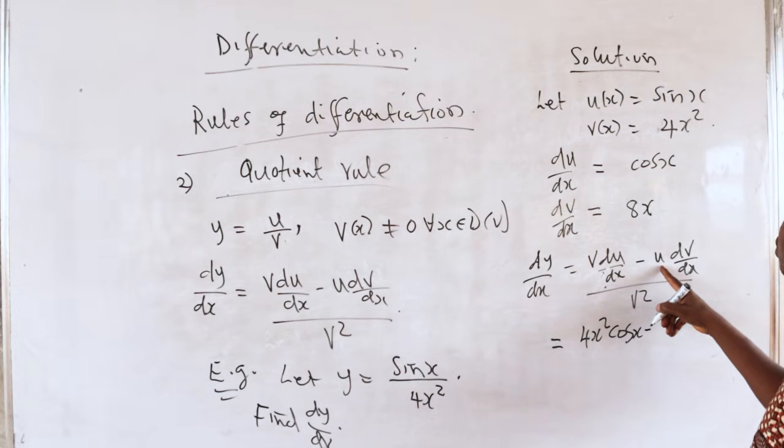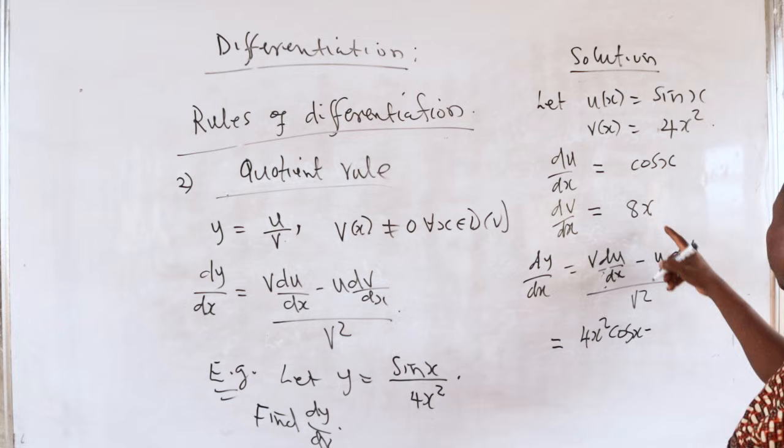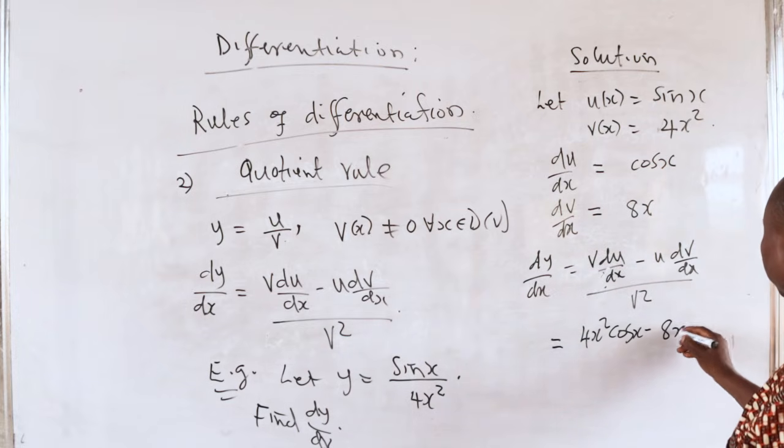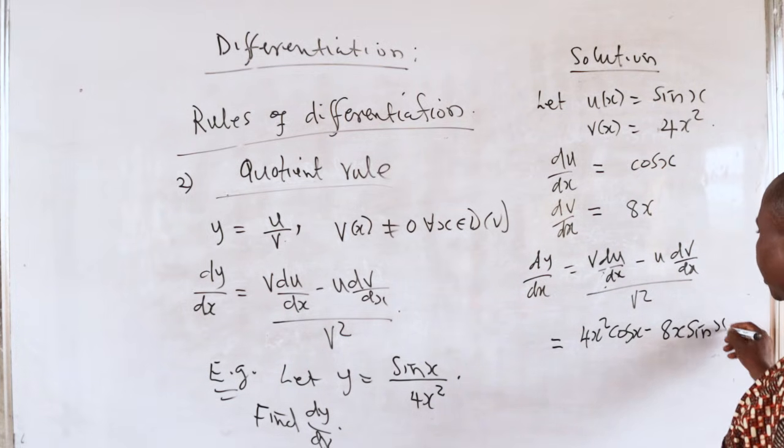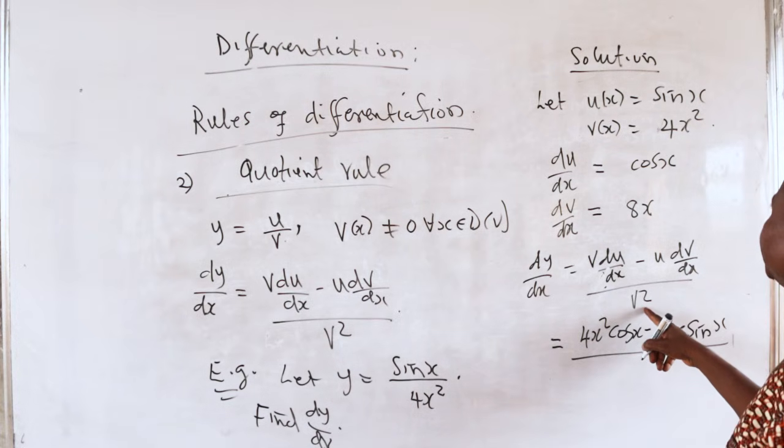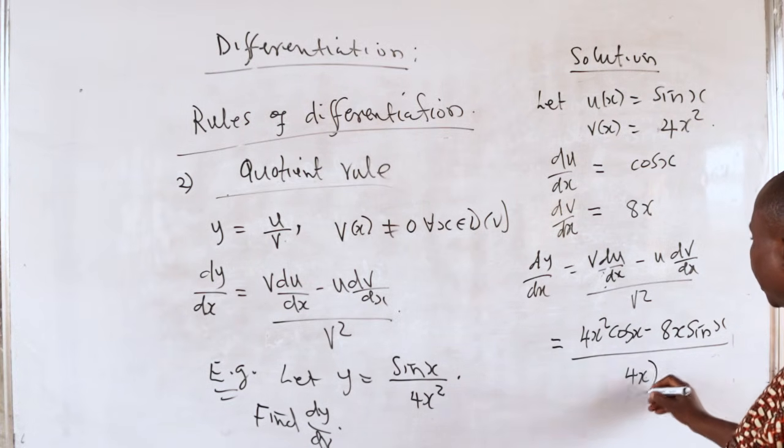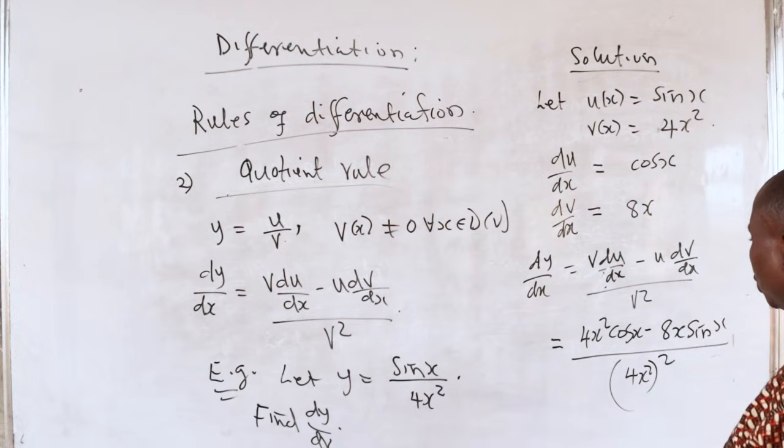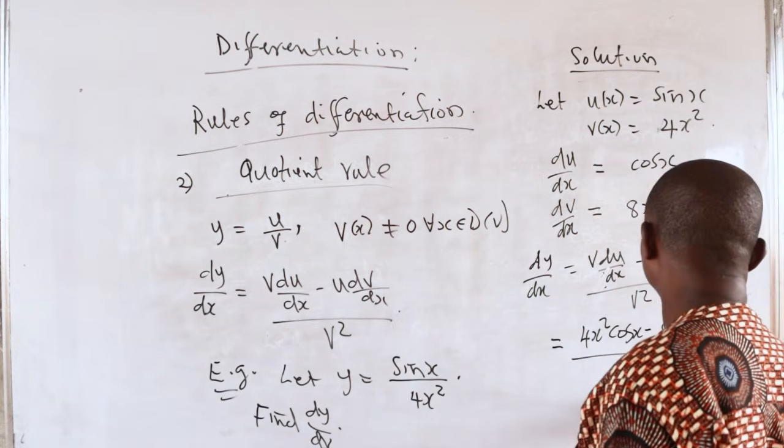our u is sin x. dv/dx is 8x, so I have 8x sin x, everything divided by v² which is 4x² raised to power 2. You can simplify this.